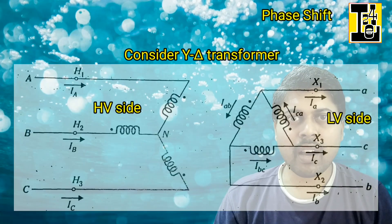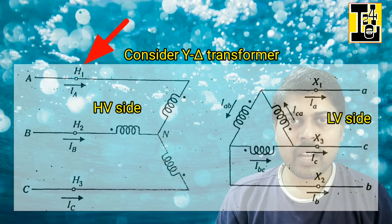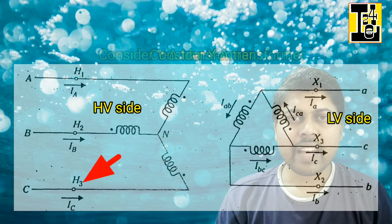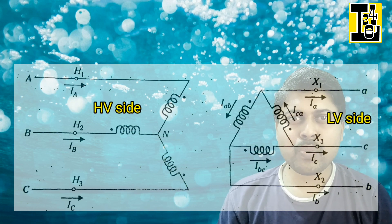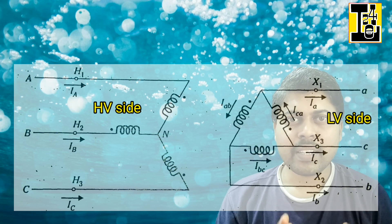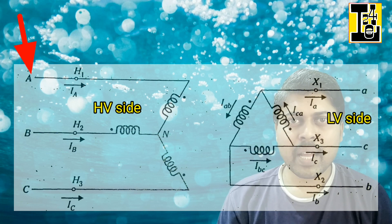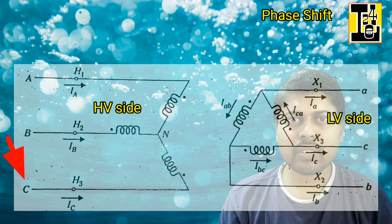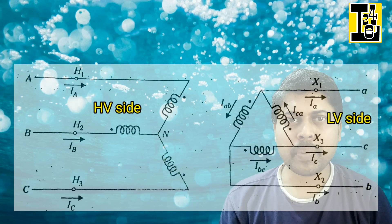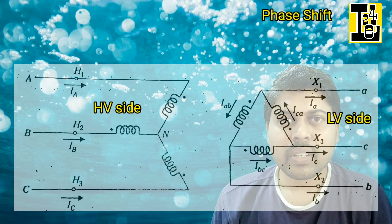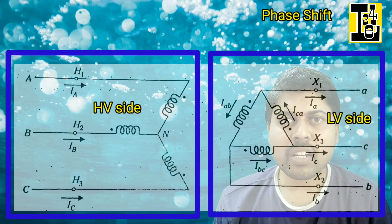The HV terminals are marked as H1, H2, H3, and the LV terminals are marked as X1, X2, and X3. The HV side phases are designated as A, B, C (capital letters), and the LV side phases are designated as small a, b, c. The windings shown in parallel to each other are magnetically coupled.